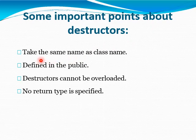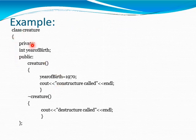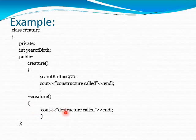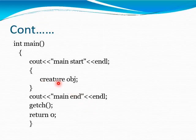Important points about the Destructor: it takes the same name as the class name, it must be defined in the public section, a Destructor cannot be overloaded, and no return type is specified. For example, Creature is a class, year of birth is a variable, and Creature is the Constructor where year of birth is set to 1970. After the Constructor, we define the Destructor with the message 'Destructor called'. In the main method, a Creature object is created — when the object is created, the Constructor is called, and when the object is destroyed, the Destructor is called. Thank you.